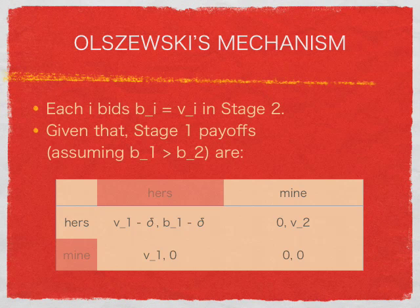I focus on Olszewski's mechanism here since it is one of the simplest in the literature. I deal with the classical case of two agents and one object. Olszewski's is a two-stage mechanism whose stage 2 is the modified auction stated earlier. Like the second price auction, each agent bids their valuation. In stage 1, each agent says either "hers" or "mine." If both say "hers," an auction is held with the payoffs shown, assuming agent 1 has the highest valuation. If only one says "hers," then the agent who says "mine" gets the object. If both say "mine," they get nothing. It is always best for agent 1 to say "mine" and always best for agent 2 to say "hers," so the object goes to agent 1.